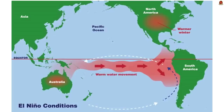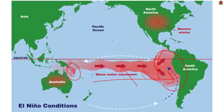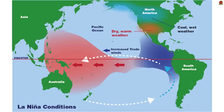El Niño is a condition in which the easterly trade winds, which normally flow from east to west in the tropical Pacific, become weak. Due to this, warm water starts to accumulate in the western margins of South America, while the East Australian coast comes into contact with cold water. Since warm coastal water causes rain and cold coastal water causes drought, El Niño results in drought in East Australia and excess rain in western South America.